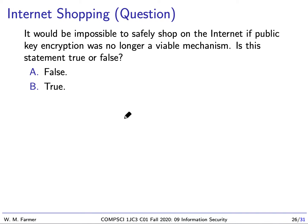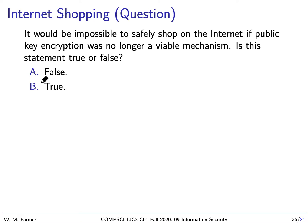The answer is true, as the internet is set up today. If we did not have public key encryption, when you wanted to go shopping, you'd need to send your credit card across the internet. Your credit card needs to be encrypted using conventional encryption. Somehow you have to send the company you're shopping with a secret key — and you can't really do that without public key encryption. So yes, it is impossible to safely shop on the internet if public key encryption is no longer a viable mechanism.